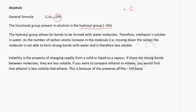So, methanol looks like this, and a water molecule looks like this. We know that a water molecule is polar. So, therefore, there's a delta negative charge on the oxygen atom and a delta positive charge on the hydrogen atoms. What happens is that you form a strong bond between this hydrogen and this oxygen. That is what makes methanol soluble in water.